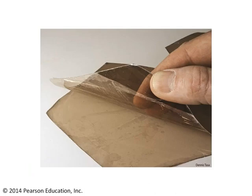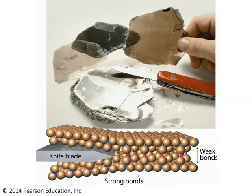Here's an interesting phenomenon. This is a crystal of mica, and you can see that this person is actually peeling back a layer from that mica. The mica readily splits into thin little sheets that are transparent and relatively flexible, but the sheets themselves are very hard to break. What's happening here is a classic example of mineral cleavage.